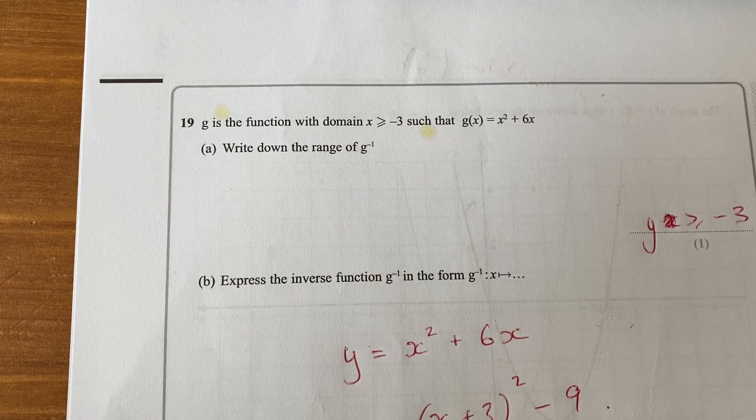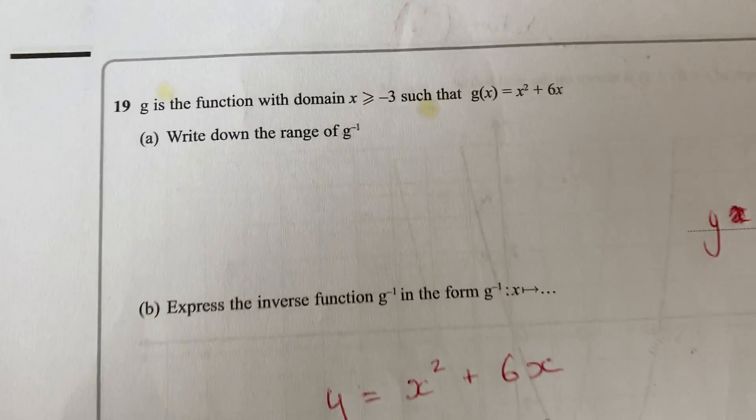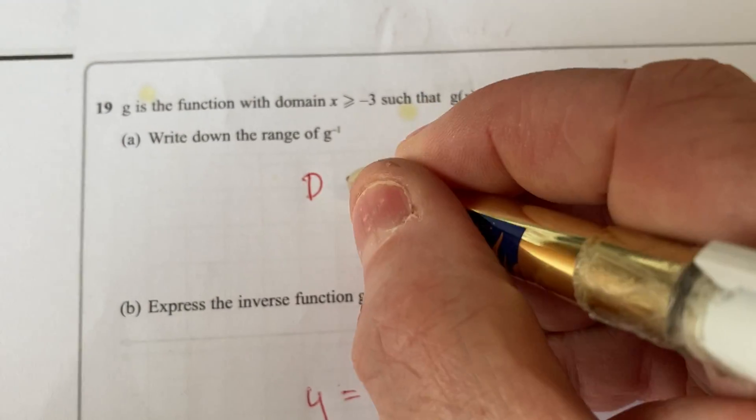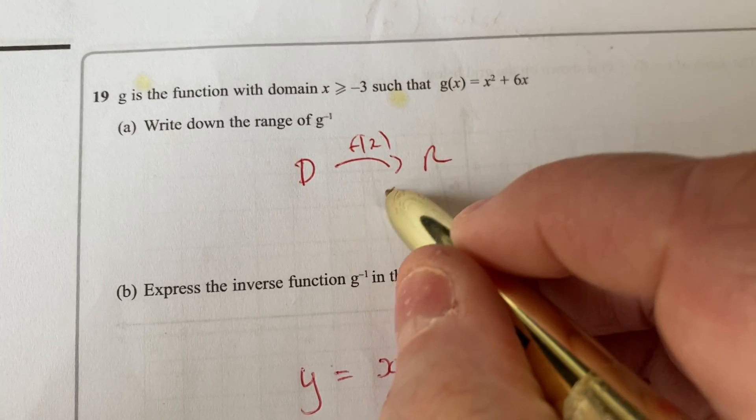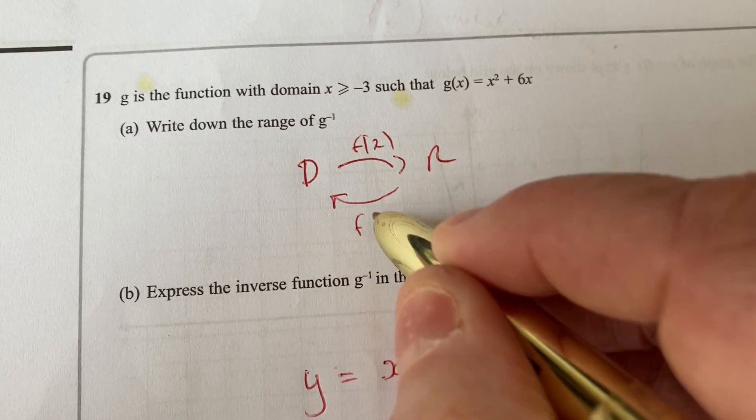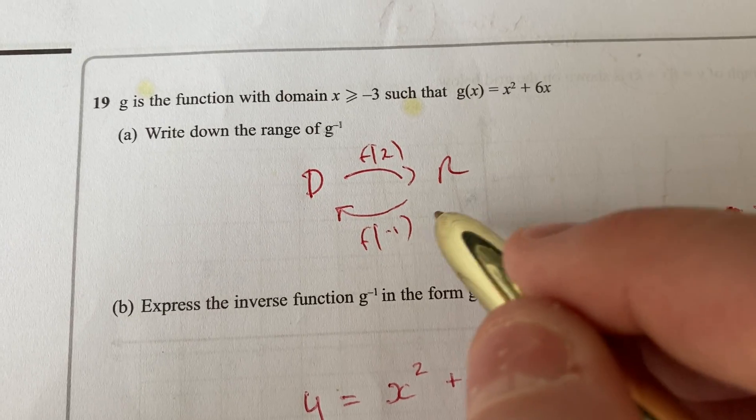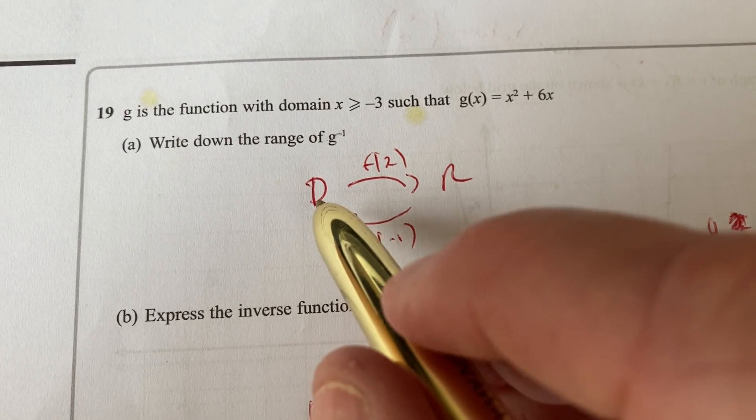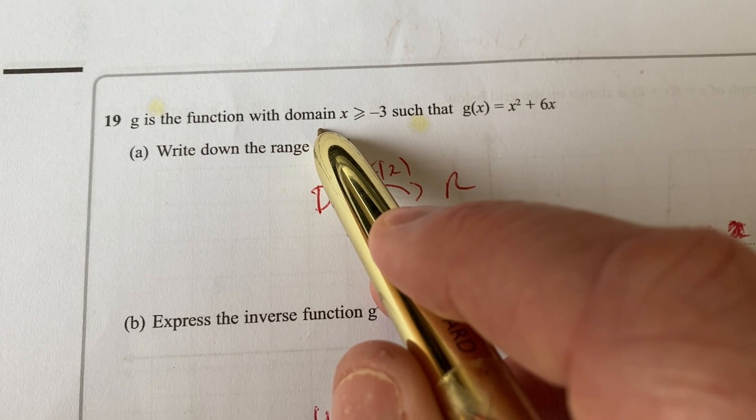Now, the domain of your original function goes to the range of the original function, so the domain goes to the range for f of x or g of x in this question, but it also acts as the range for the inverse function. So the inverse function comes back, and its range would be the same as what you used in the first place.